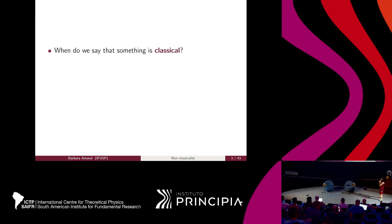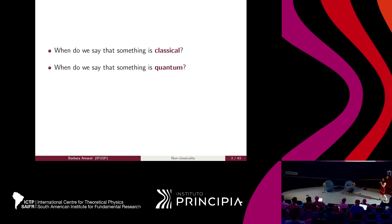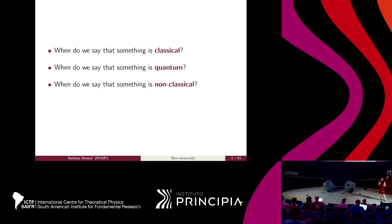The question I want to address here is: what do I have to see to say that something is classical? Or what do I have to see to say that something is quantum? Or more generally, what do I have to see to say that something is non-classical? The answer to these questions depends on the problem you're dealing with. Here I want to address two possible answers that might be of interest to gravity experiments.